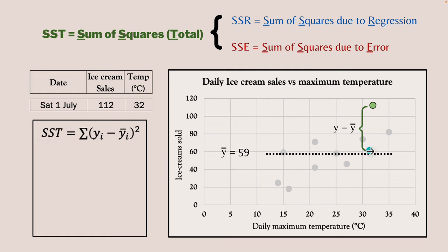It's only with that third observation that we can run a regression, because that line of best fit can now sort of escape from the observations themselves and be drawn in between them. That's where we say we have one degree of freedom. It's not a great regression - you'd want more observations. With four observations you'll get two degrees of freedom, five observations you'll get three degrees of freedom, and so on. But the key point is that two observations does not make a regression.